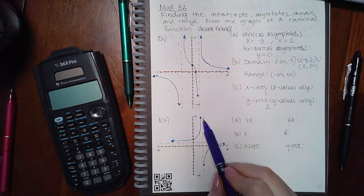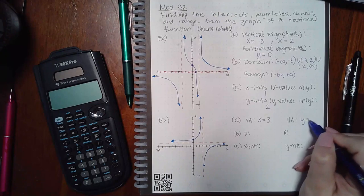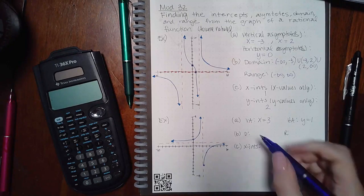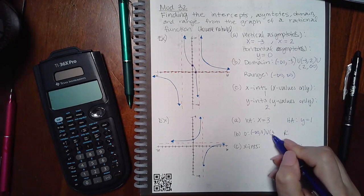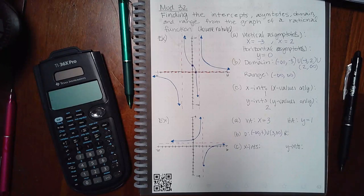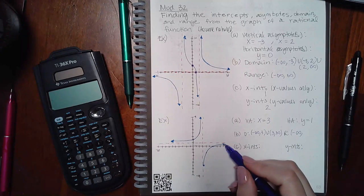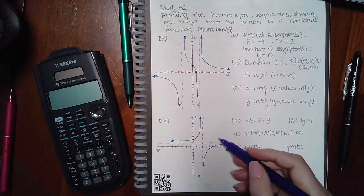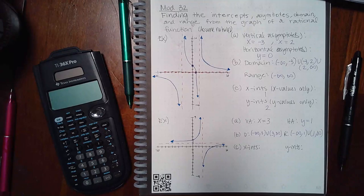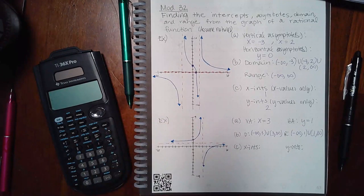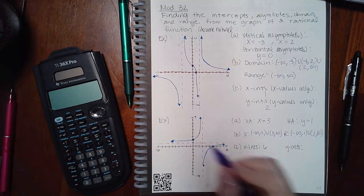For the next example, the equations of my vertical asymptote: I only have one vertical dotted line and it is at x equals three. I have one horizontal line at y equals one. The domain goes from negative infinity to three, then picks up on the other side going to positive infinity. The range has a break at y equals one. My x-intercept is at six, and my y-intercept is at two.